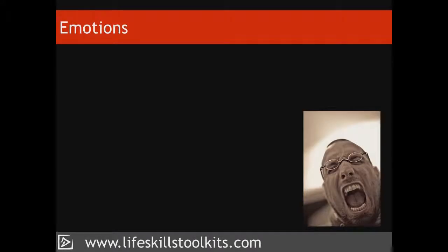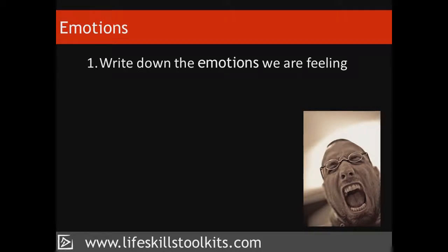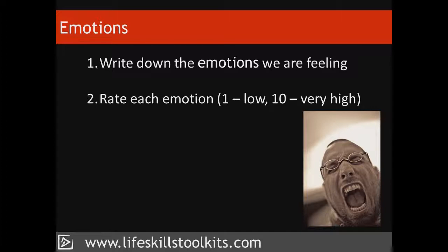Emotions. This first step requires us to do three things. 1. Write down the emotions we're feeling — for example, frustration, despair, anxiety, embarrassment, or jealousy. 2. Rate each emotion for intensity by giving it a score between 1 (very low) and 10 (very high). 3. Consider what these scores tell us about our emotions.